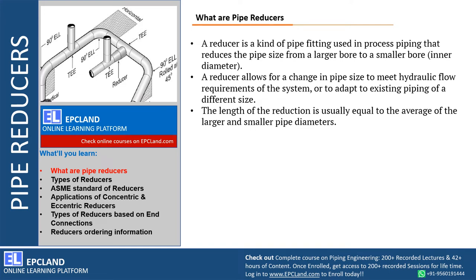Welcome. In this video we are going to talk about pipe reducers. Reducers are a very common kind of fitting used in the piping industry. Let us start with the agenda: what are reducers, various types, ASME standards, application of concentric and eccentric reducers, types of reducers based on end connections, and then the ordering information required to procure reducers.